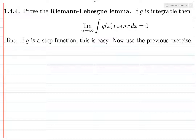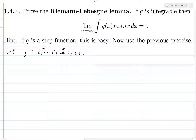Let's do what they advise: let g be a step function, and then apply the previous exercise. Let g be the sum from j equals 1 to m of c_j times the indicator function on the open interval from a_j to b_j. For any j, we compute the integral, assuming that the open intervals from a_j to b_j are disjoint.